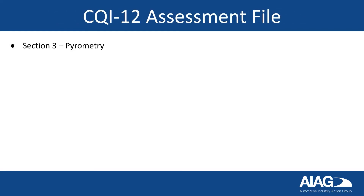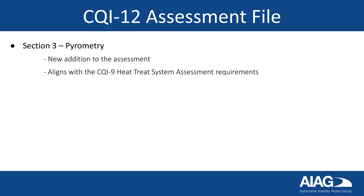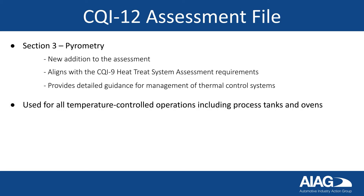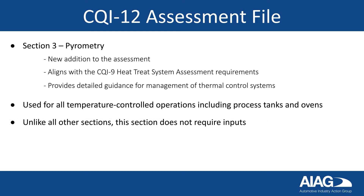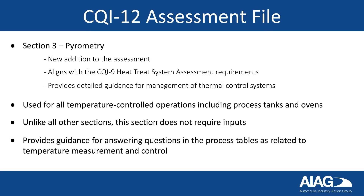Section 3 Pyrometry is a new addition to the assessment. It aligns with the CQI-9 Heat Treat System Assessment requirements but has been tailored for coding applications. This section provides detailed guidance for management of thermal control systems and should be used for all temperature-controlled operations, including process tanks and ovens. Unlike the other sections, Section 3 does not require inputs; however, it does provide guidance for reporting information in the process tables as related to temperature measurement and control.